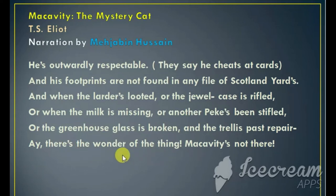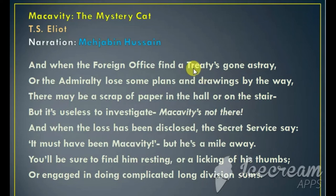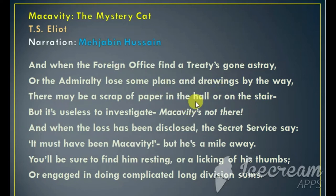But after all these damages, if you look for Macavity, suspecting that he has done it, you will never find the cat. And when the foreign office finds that a treaty has gone astray — when the peace treaty signed between two nations has gone missing, when an important document goes missing — or the admiralty loses some plans and drawings, or somebody from the admiral's office loses some other documents, there may be a scrap of paper in the hall or on the stair, but it is useless to investigate: Macavity is not there, the cat who had committed these crimes is missing.